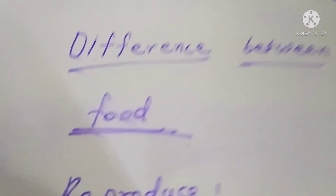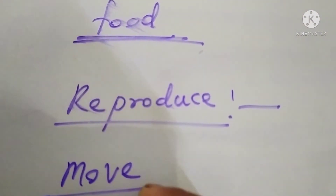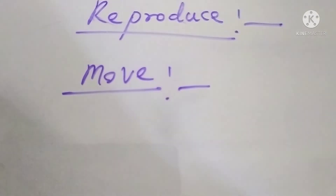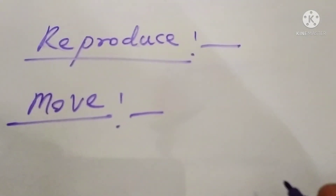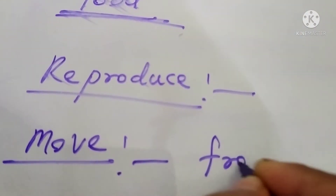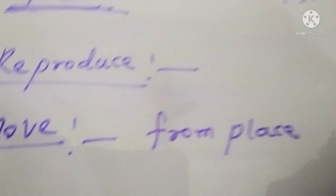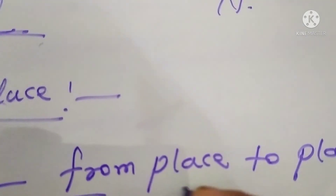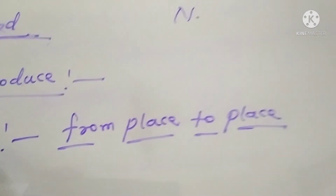Living things move. All animals have legs, and with the help of these legs, animals move from one place to another place. Can a stone move? No, it cannot — because it is a non-living thing.